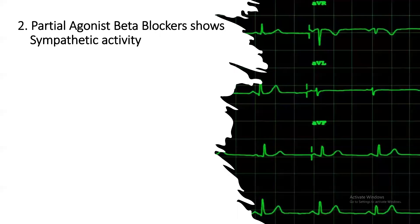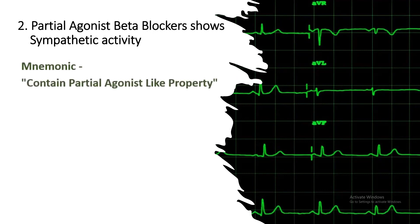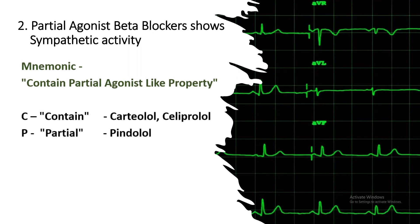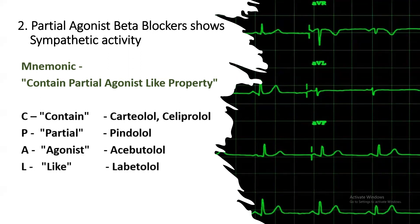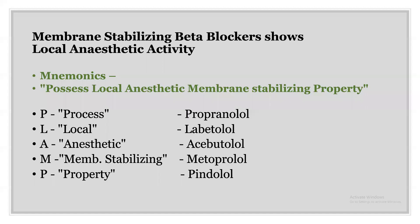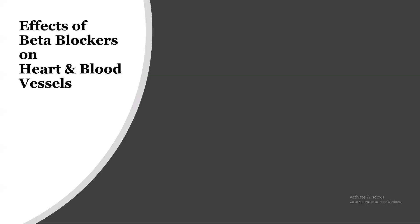Partial agonist beta blockers show sympathomimetic activity, remembered as 'contain partial agonist like property': C for carteolol, P for pindolol, A for acebutolol, L for labetalol, P for penbutolol. Membrane-stabilizing beta blockers show local anesthetic effects, remembered as 'process the local anesthetic membrane stabilizing property': P for propranolol, L for labetalol, A for acebutolol, M for metoprolol, P for pindolol.